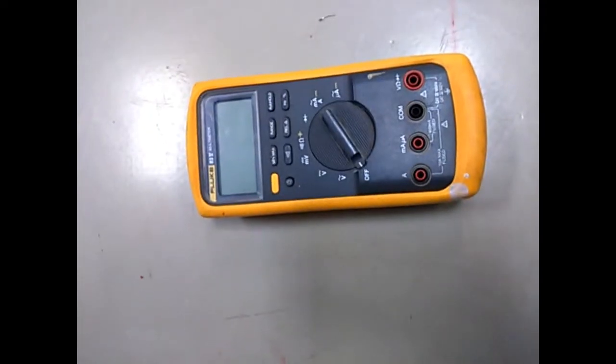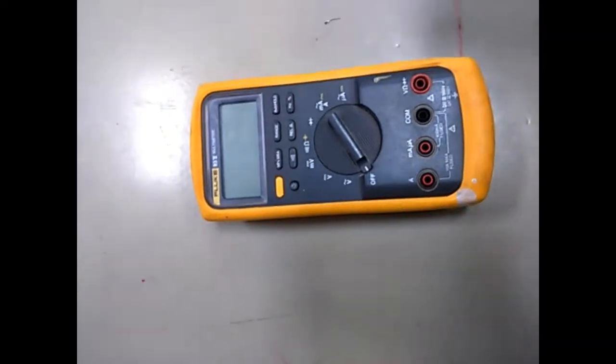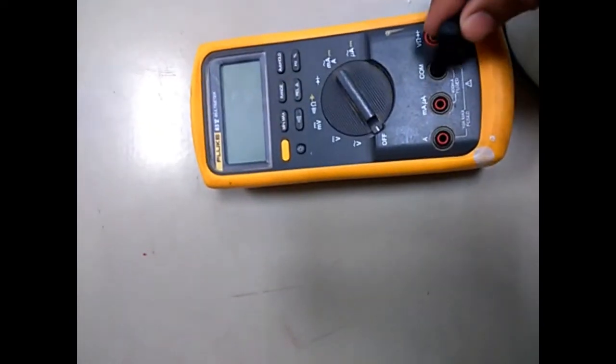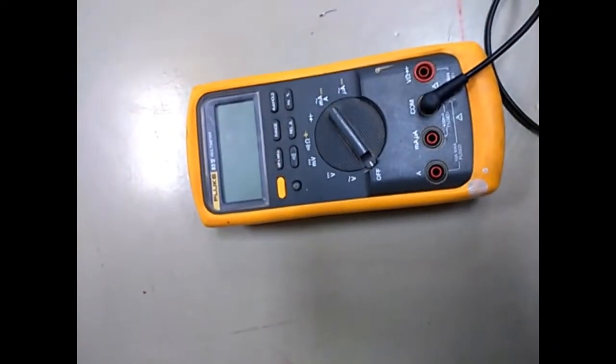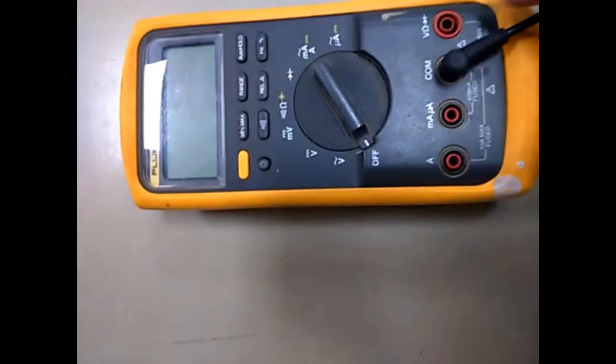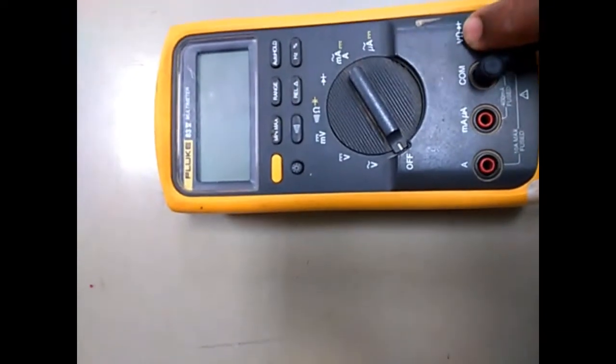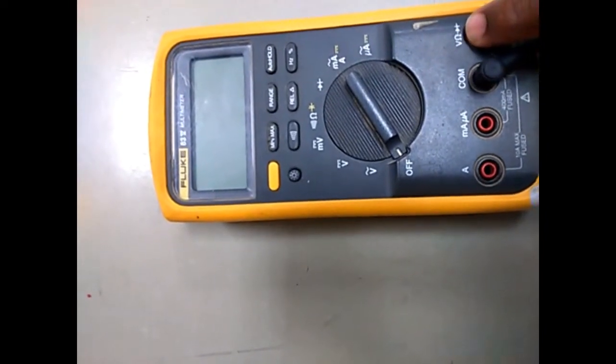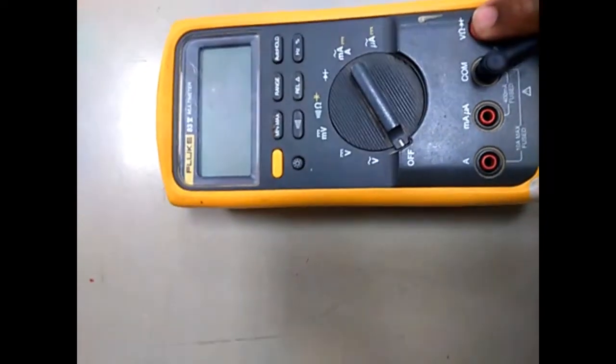Now, take this black lead and place it in the common port. The phase lead, we will place in the red port where it can check voltage, resistance, and ohms.